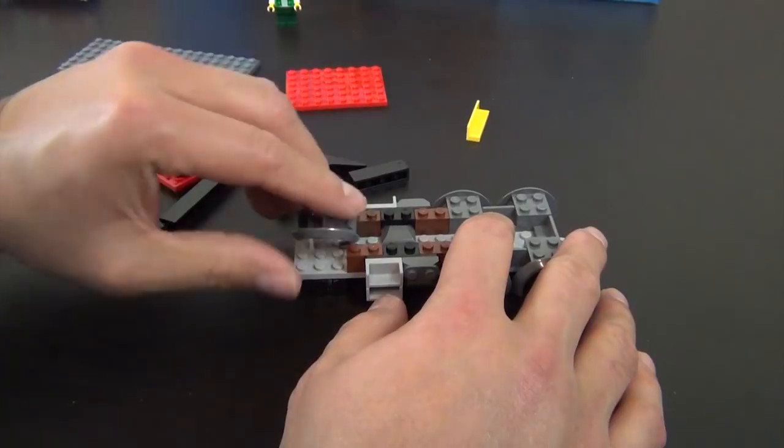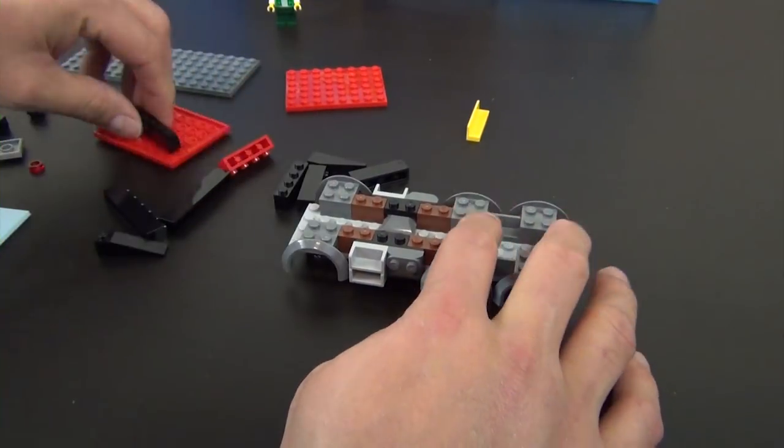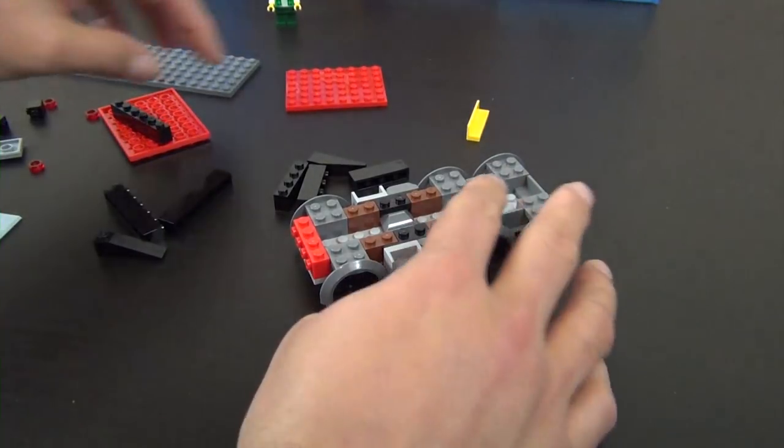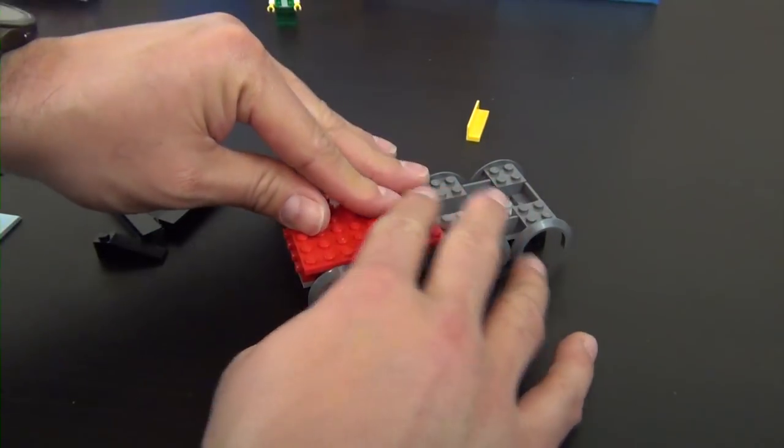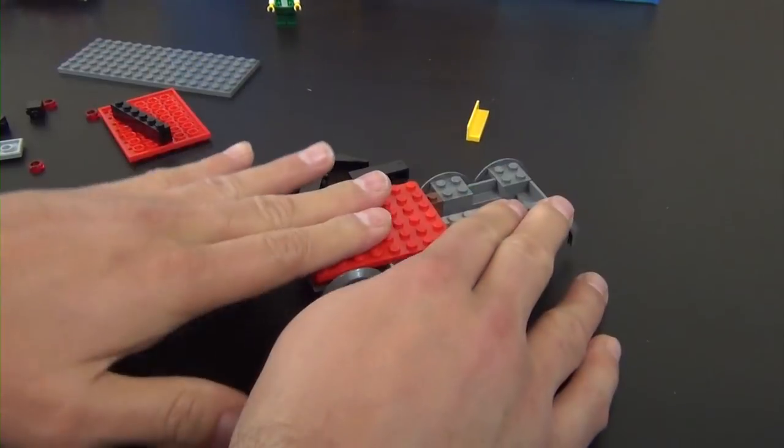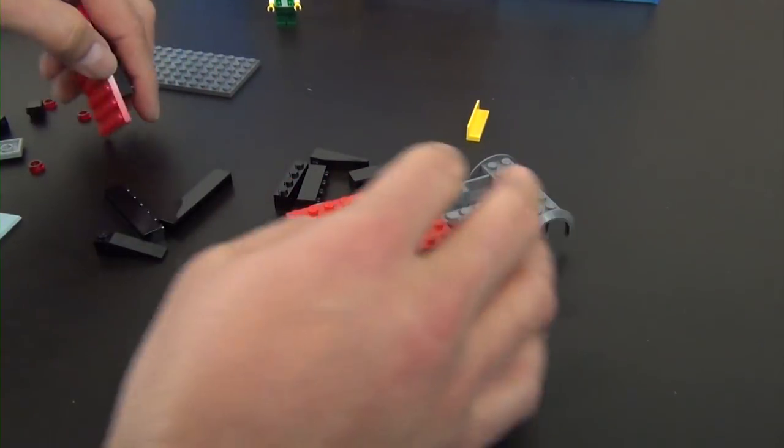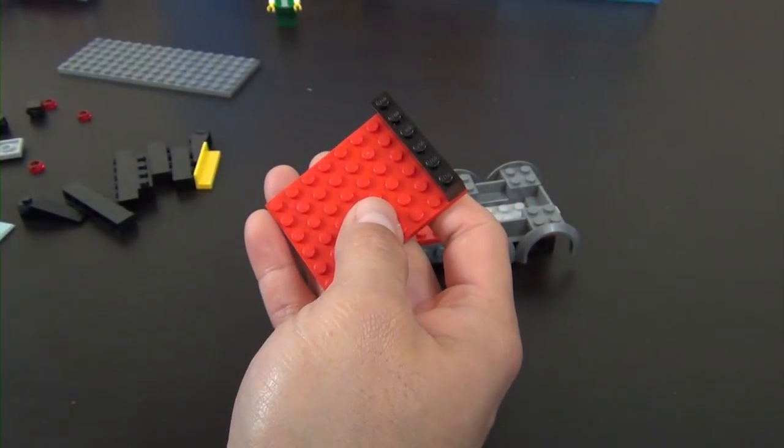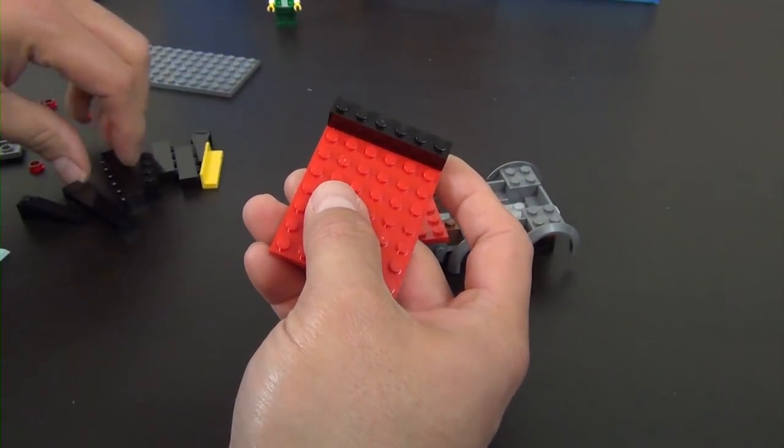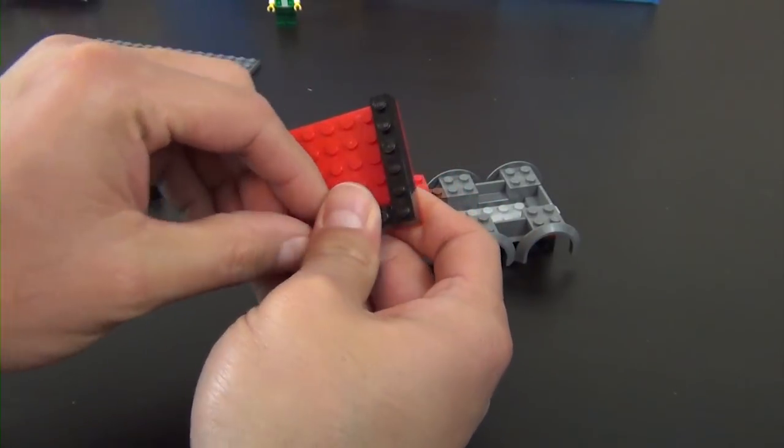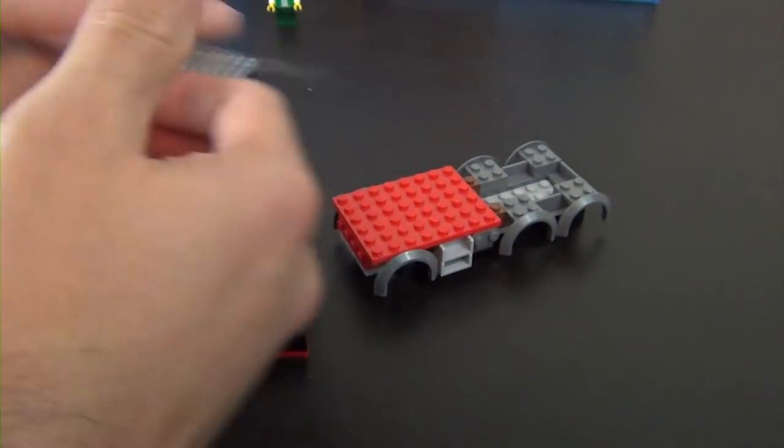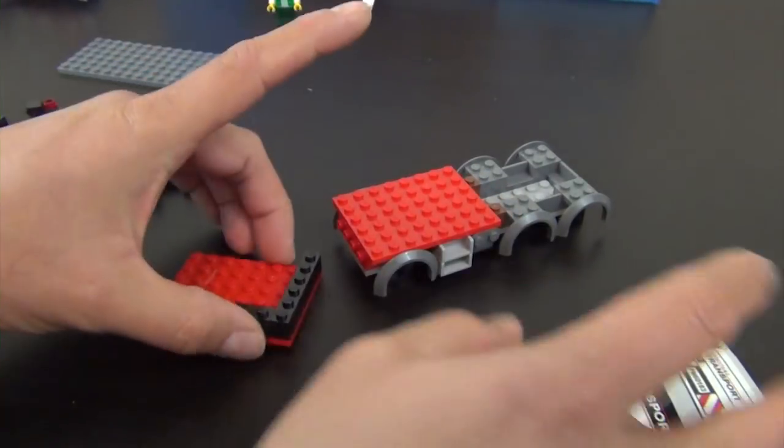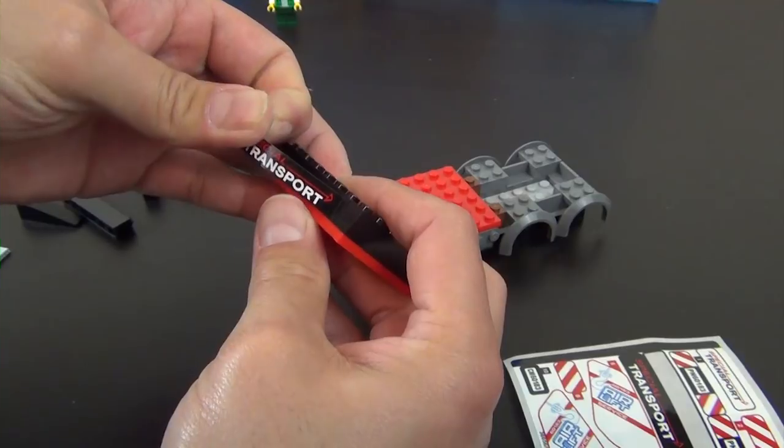Alright. Two more fenders. This red brick with studs on the side. And we have a pretty large red plate that goes over everything. We have another large red plate. And this is going to get our first sticker. Sticker number five.